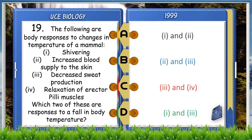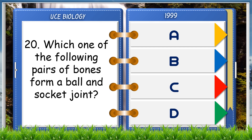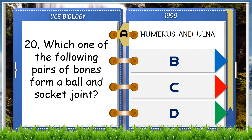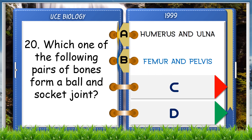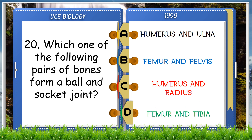Which one of the following pairs of bones form a ball and socket joint? A. Humerus and ulna, B. Femur and pelvis, C. Humerus and radius, D. Femur and tibia. The answer is B, femur and pelvis.